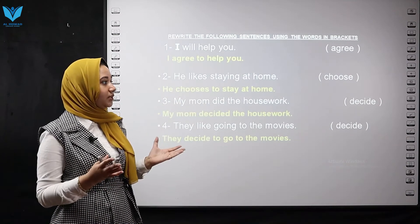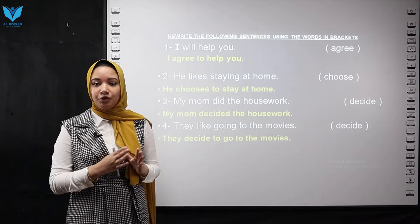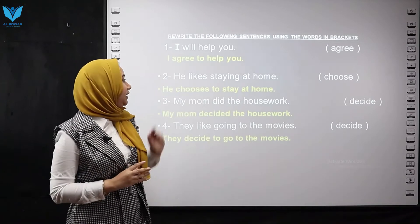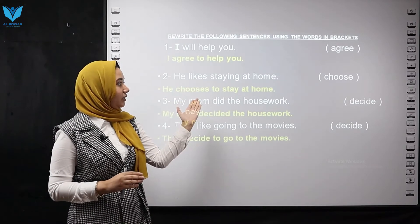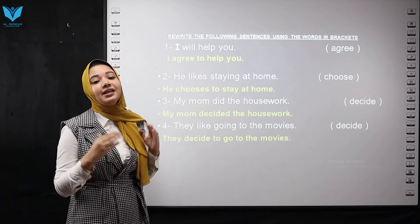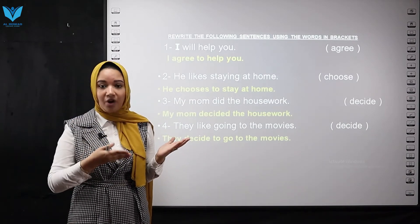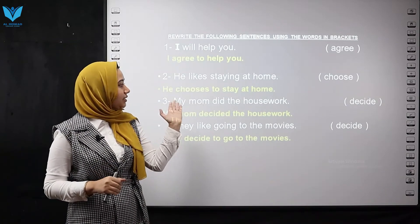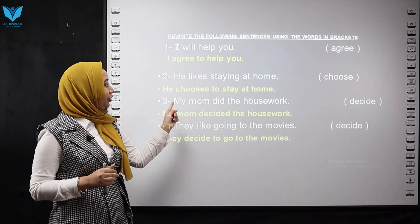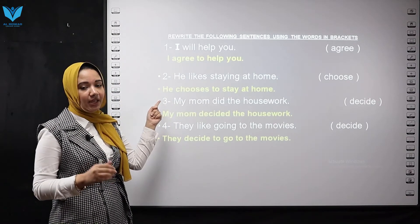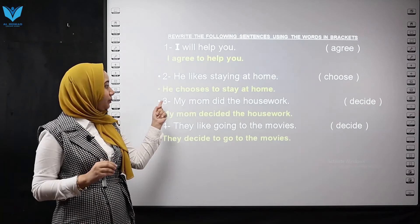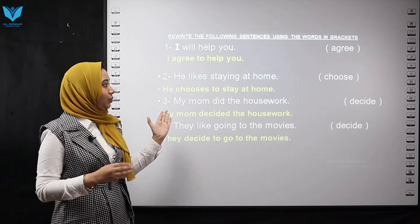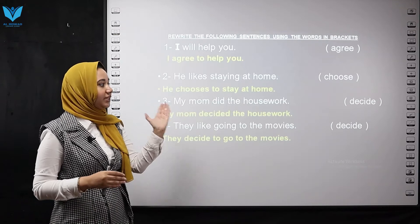Number two: He likes staying at home — use 'choose.' After 'choose,' we put 'to' plus the base form. The main verb is 'stay.' I remove 'likes' and '-ing.' With 'he' in present simple, I add 's,' so it becomes 'chooses.' The answer is: He chooses to stay at home.